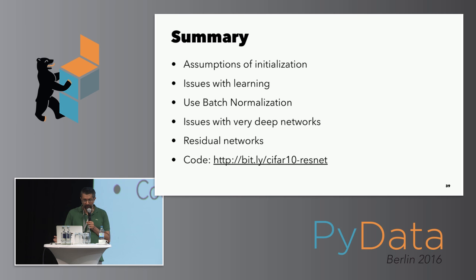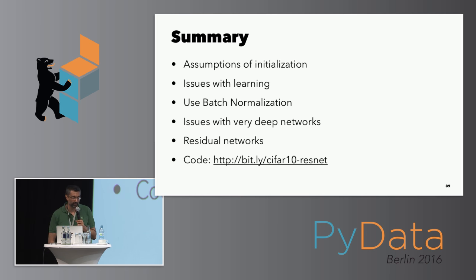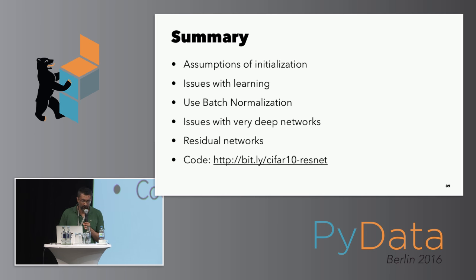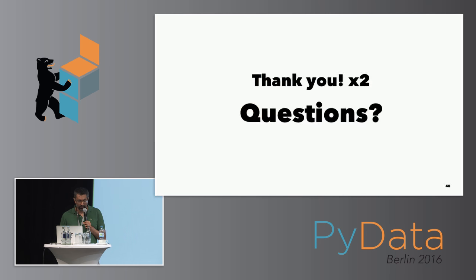To summarize: I hope you learned about the assumptions behind weight initializations, the issues with training deep networks, and to please use batch normalization — though if you do, there are certain things you have to change. Even after batch normalization, it's difficult to train deep networks. You should now know residual networks, because it's easier to train the residual than the actual function. The code is available as a gist at the bit.ly link.